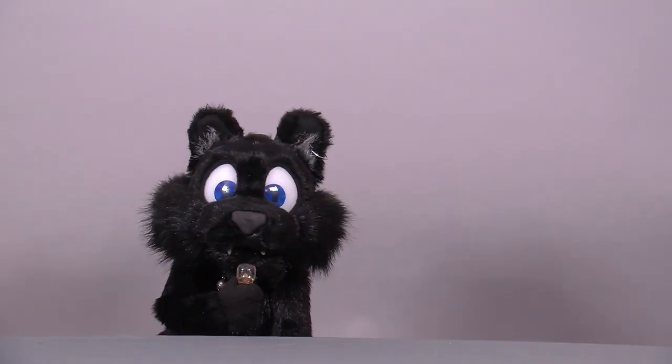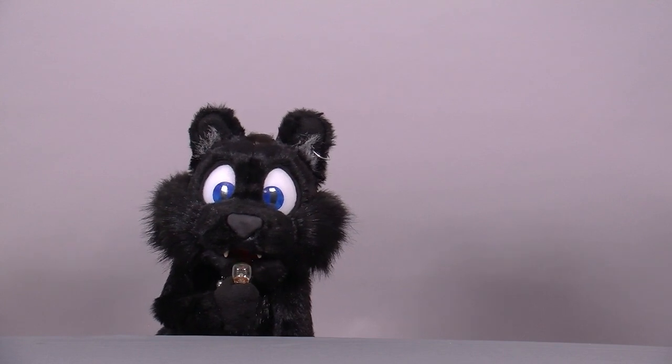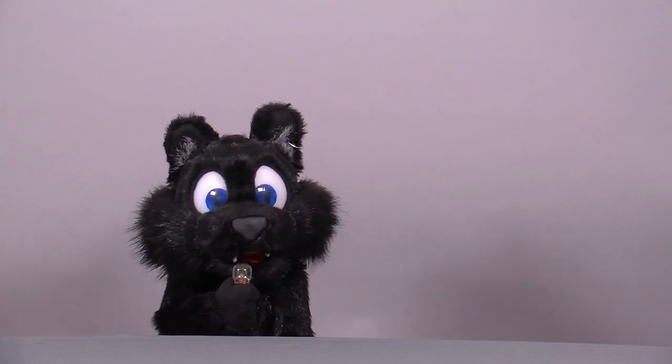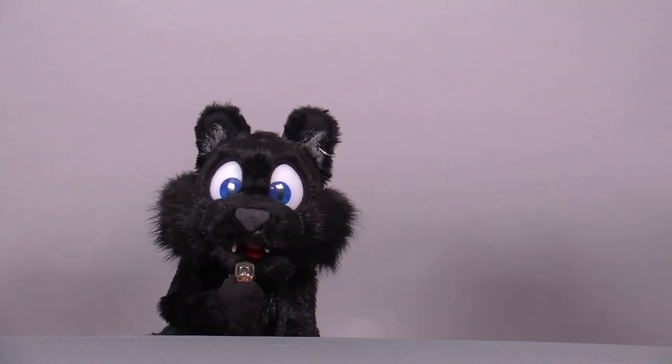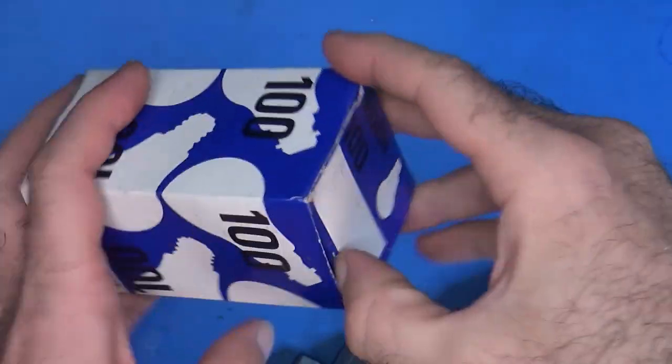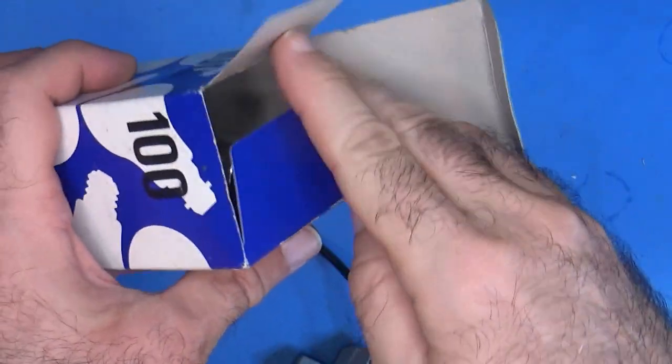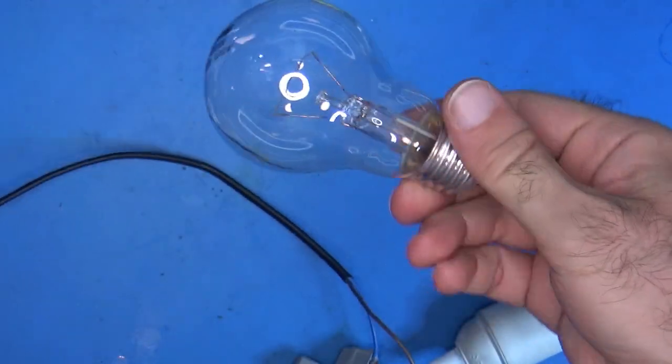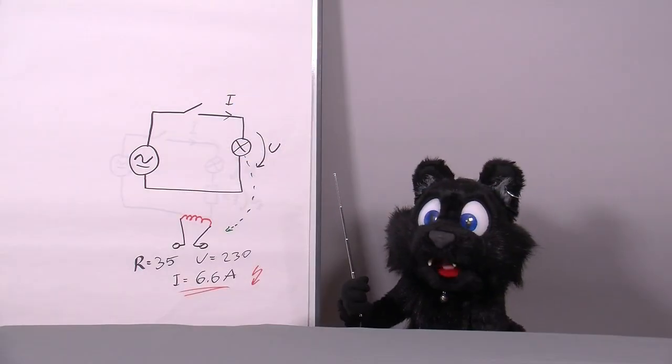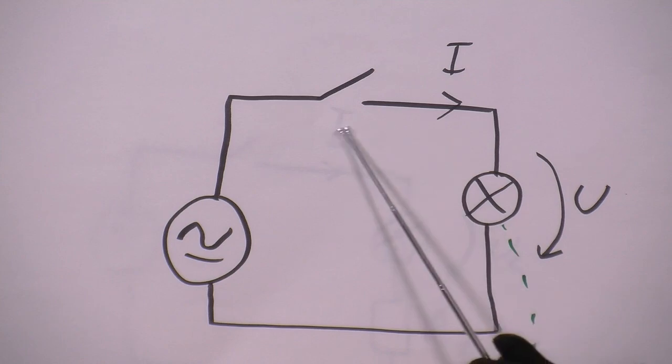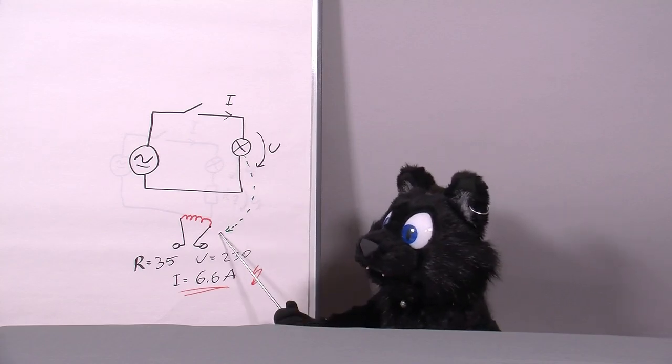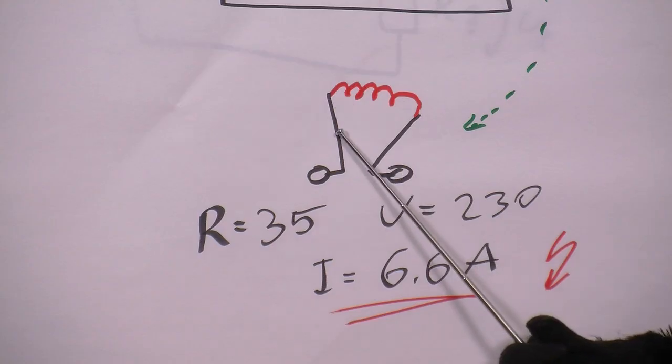First and foremost we are talking about incandescent light bulbs here, not any of the fancy new energy-saving ones. Such a light bulb is, essentially, a thin piece of wire called filament strung over two contacts.